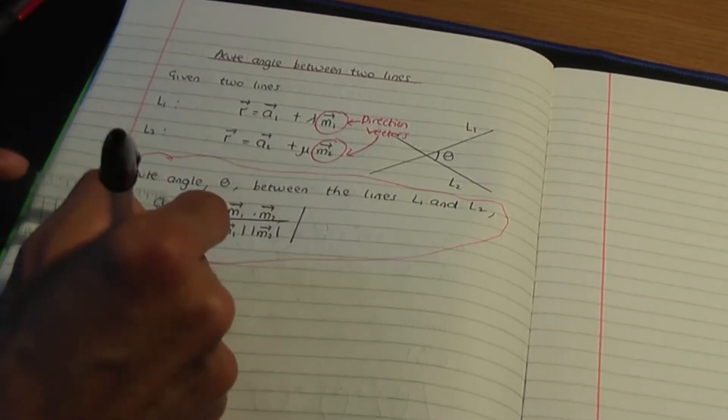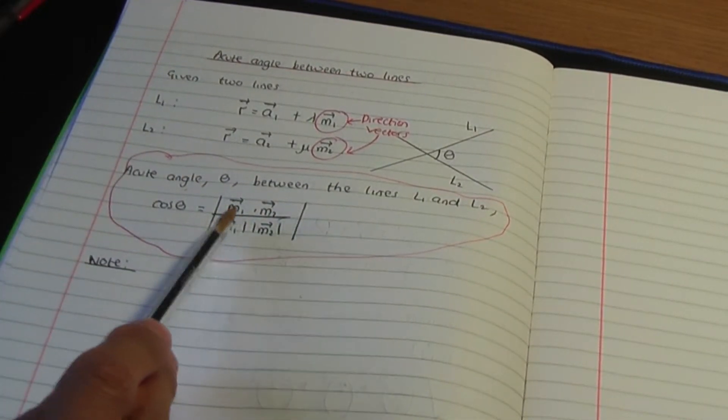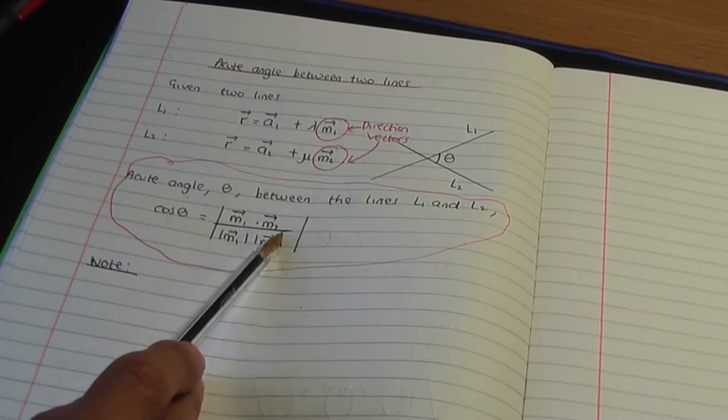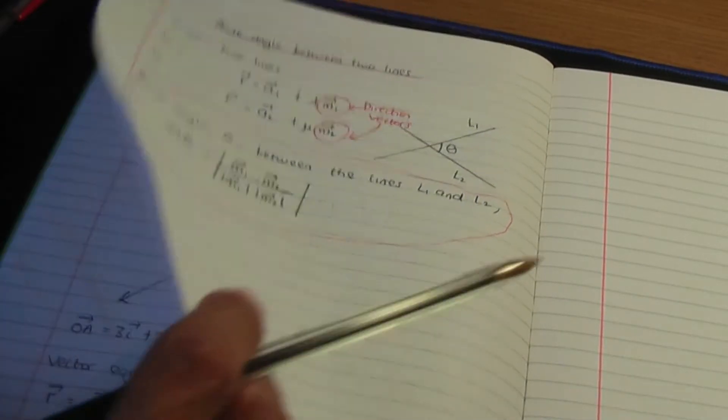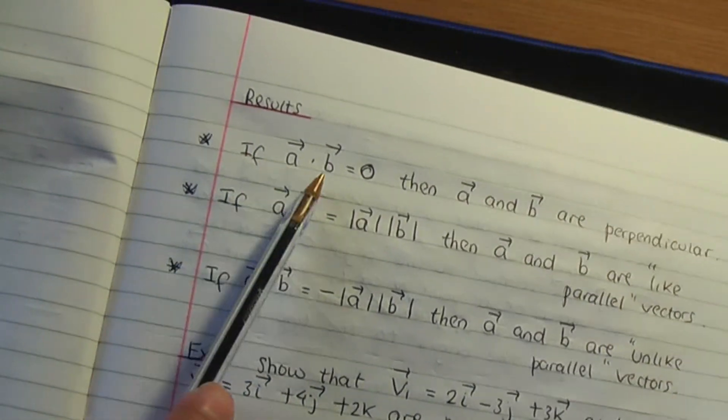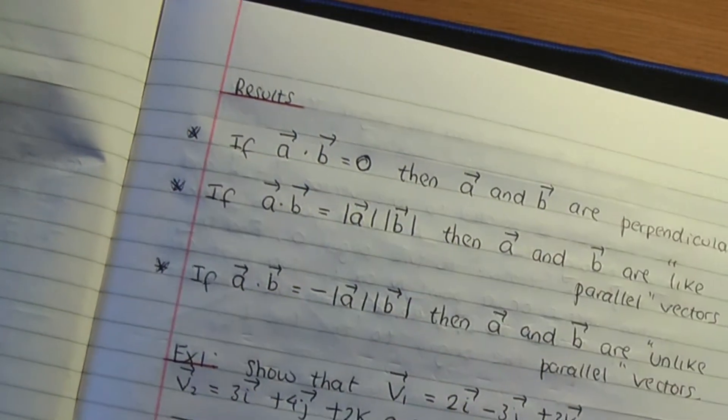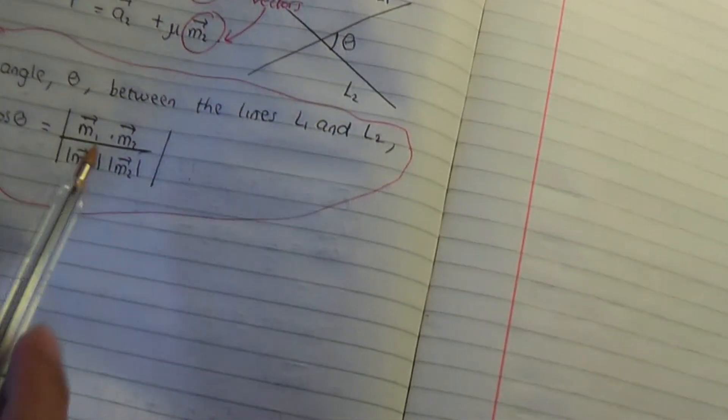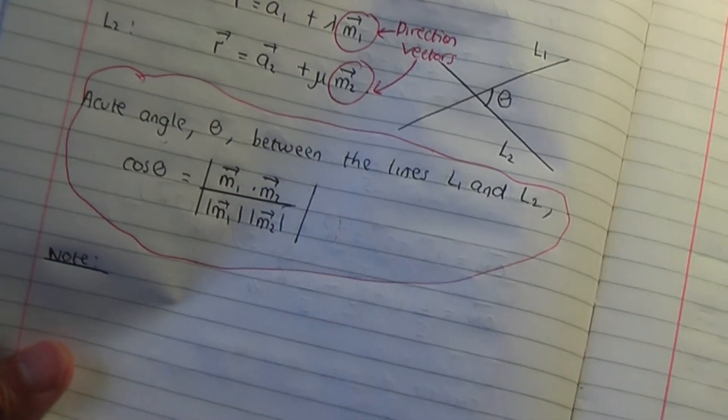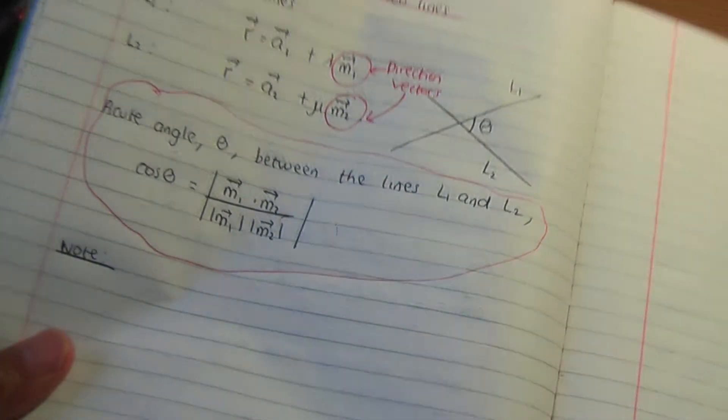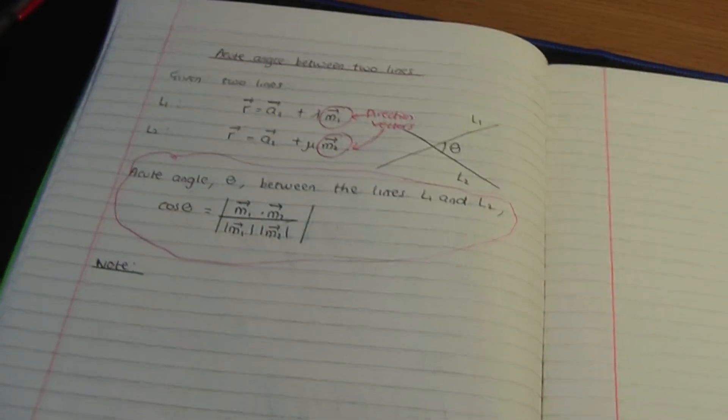Here's a note. Supposing if M1 dot M2 is 0. If M1 dot M2 is 0, remember in the previous video, if you work out the scalar product and if the result is 0, that means that your vectors are perpendicular to one another. So in this case, if the scalar product of the direction vectors is equal to 0, that implies that your two lines are perpendicular. So let me make that note known.